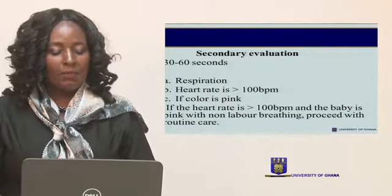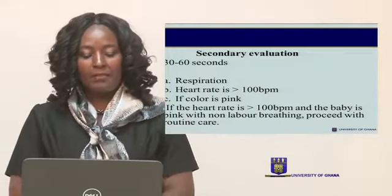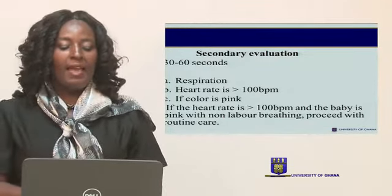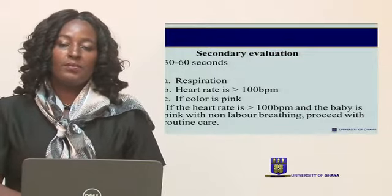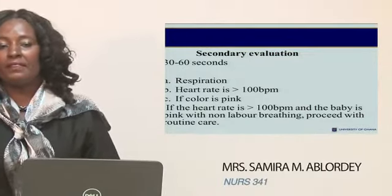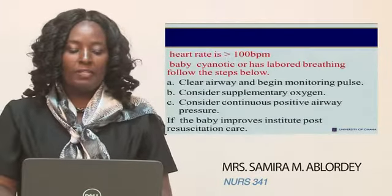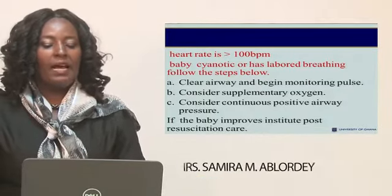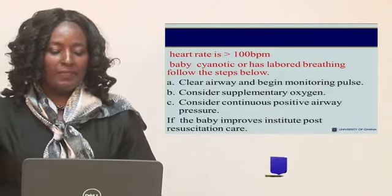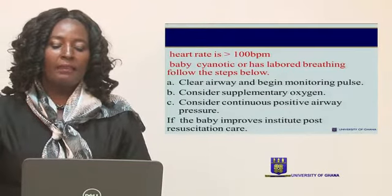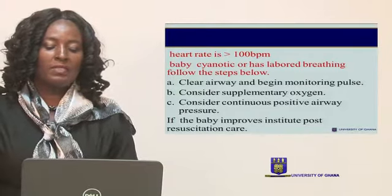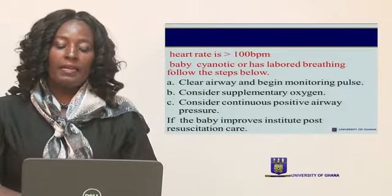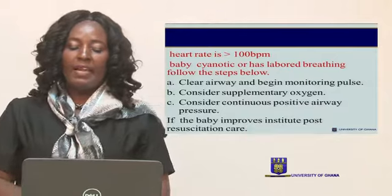In the secondary evaluation, from 30 to 60 seconds, you assess respiration and make sure the heart rate is more than 100, and the color is pink. If the APGAR score is above 7, everything is going well and no active intervention is needed. However, if the baby is cyanotic and has difficulty breathing, there is a need to clear the airway, monitor the pulse, consider supplementary oxygen, and consider continuous positive airway pressure.